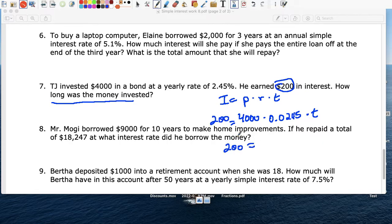200 equals, and let's multiply it, 4,000 times 0.0245. That gives you 98T. And divide both sides by 98. And T equals 200 divided by 98. You're going to get a long decimal. So let's just round to the nearest hundredth. 2.04 years.